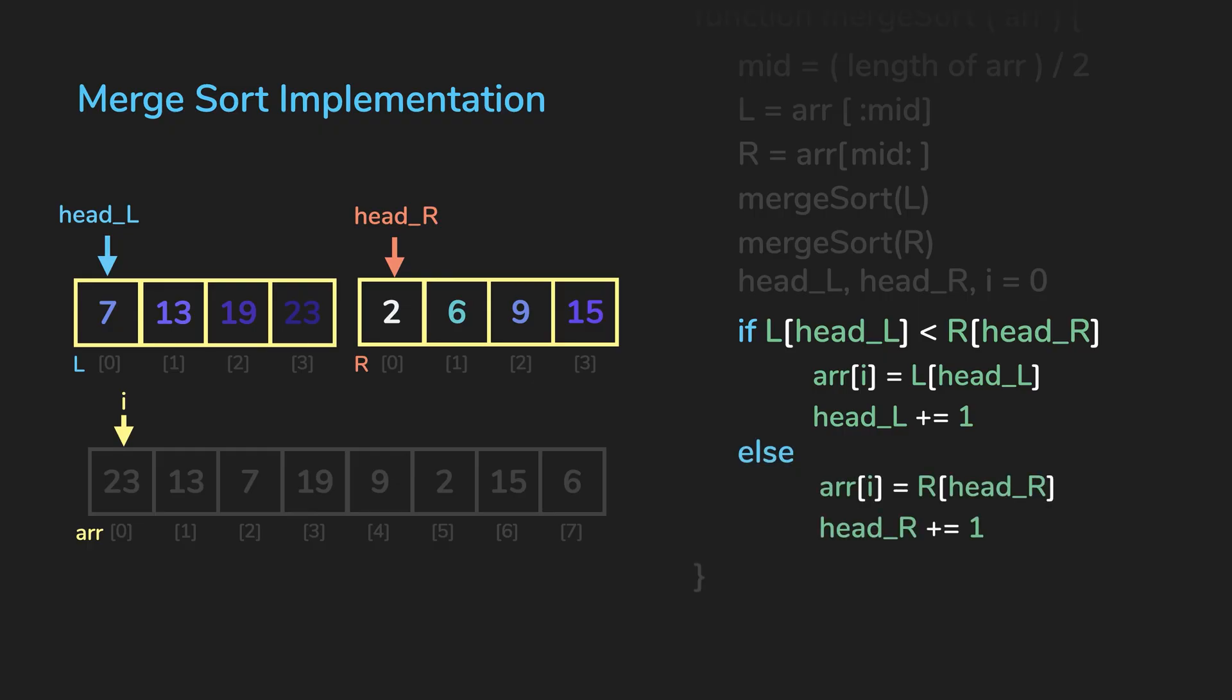In this example, two is smaller, so we assign the number two on array in index i and we increment head_R. If the two numbers are equal, we'll just say that head_R is smaller, so it will be captured in the else statement.